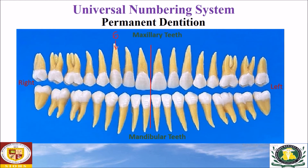The numbers start from 1 for the third molar, 2, 3 for the first molar, 4 for the first premolar, 5 for the second premolar, and 6 for the canine of the right side.